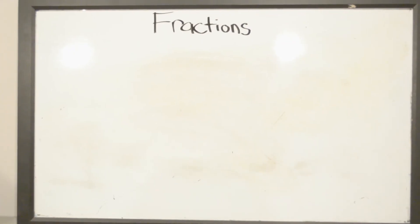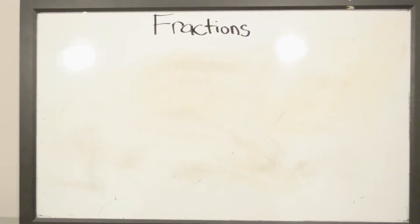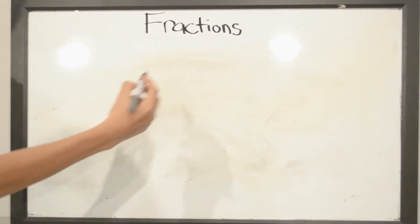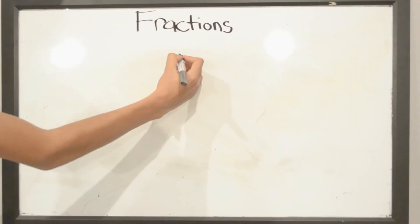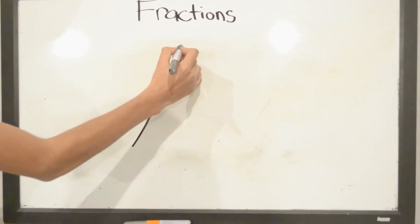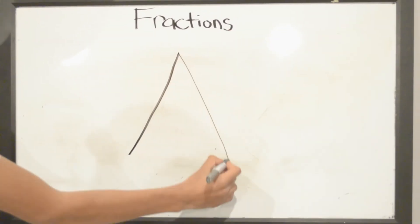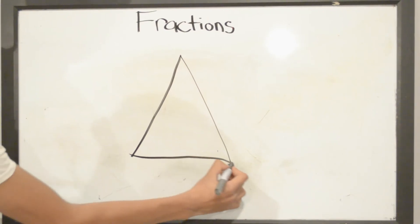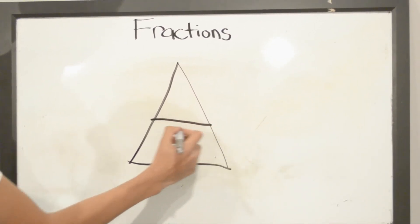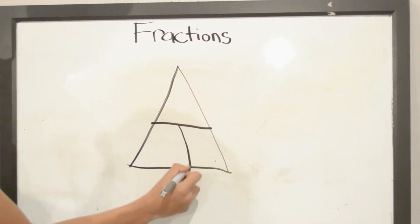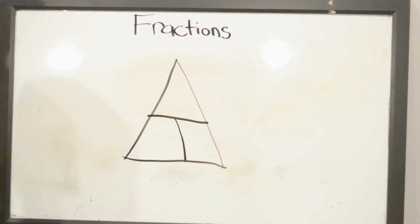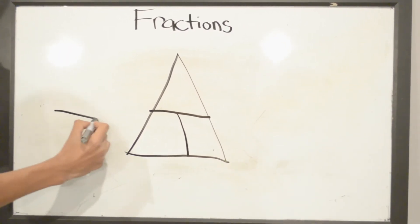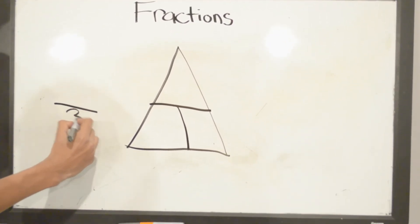For our last example for fractions, we will draw a triangle here. And in this triangle, we will break it down into 3 parts. So our denominator will be 3, and we write down 3 here.